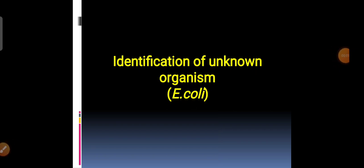Good afternoon dear students. We are going to discuss the first experiment today. In the last experiment, I gave you an outline of how to identify an unknown organism. So we have to study the identification of a known organism, and that for four different organisms.